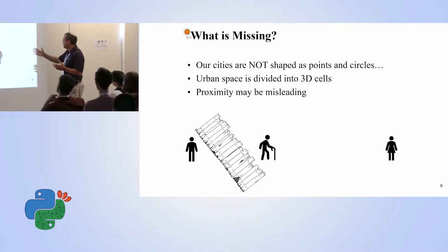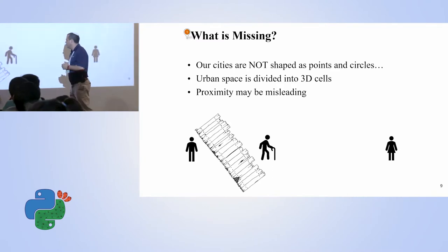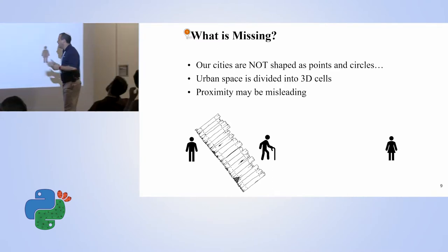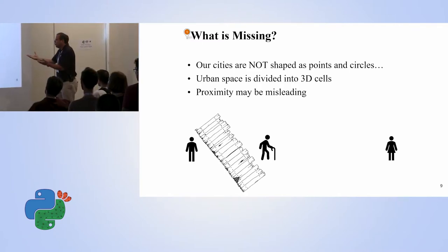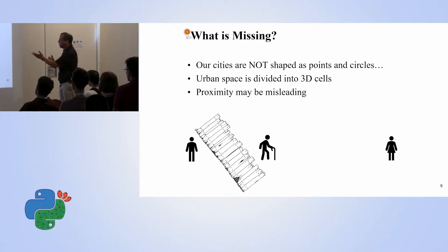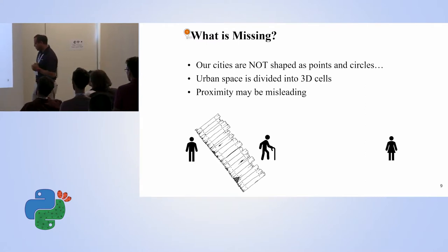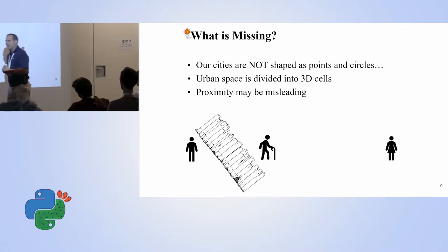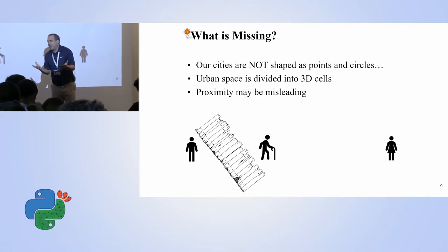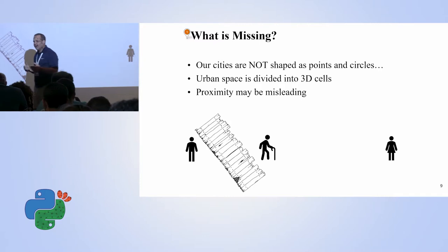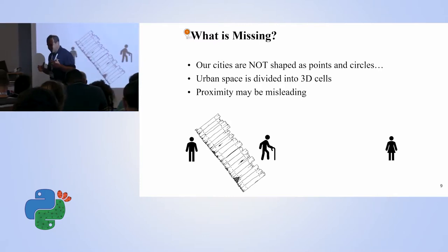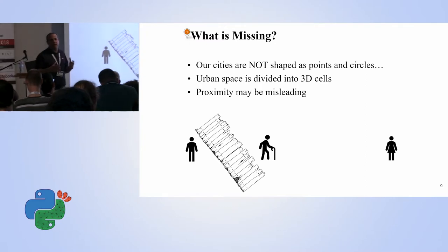Consider this scenario: we have an old person who needs some help. We see a gentleman on the left and a lady on the right. It's clear the lady will come first because there is a fence between the old person and the gentleman on the left. When we talk about a 100-meter buffer, it doesn't take into account how the city is divided. And not only is the city divided in a special way — it also has a third dimension.